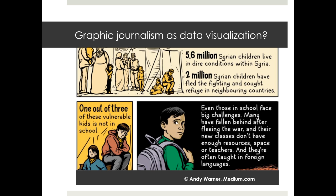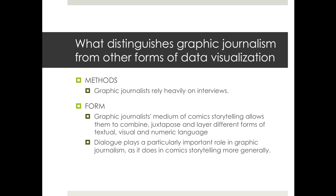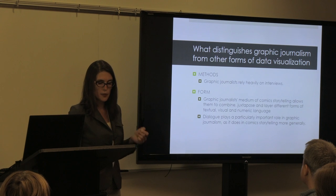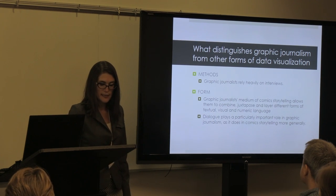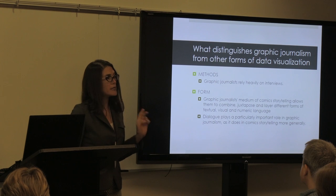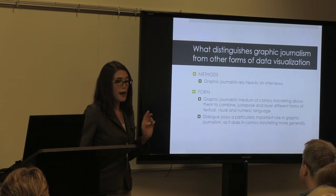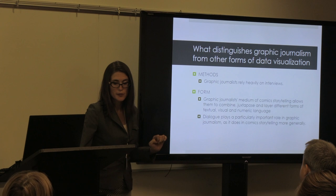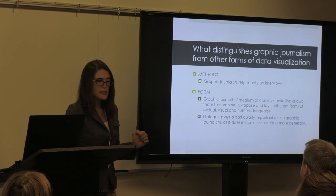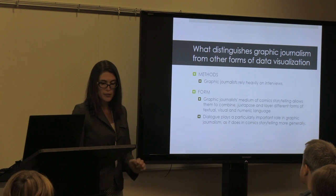Graphic journalism also has some important differences from the data visualization strategies more commonly used in journalism. The first level at which these differences can be observed is a methodological one. In recent discussions and popular guides to data visualization in journalism, the process of visualizing data is typically approached as something that should begin with a numeric data set. The Data Journalism Handbook, for instance, specifies that in visualizing data, everything you create needs to originate from a series of atomic charts and graphs. In contrast, graphic journalists have generally emphasized that they begin their work with interviews.